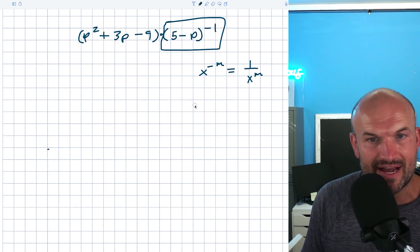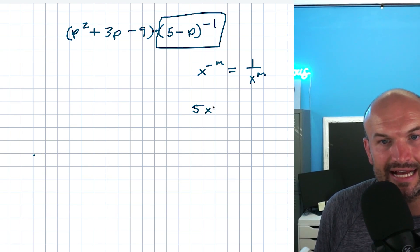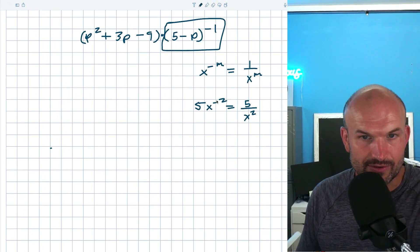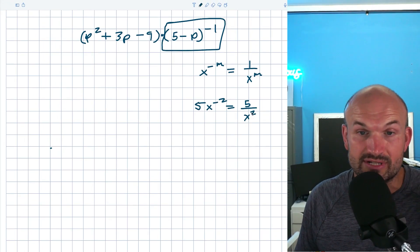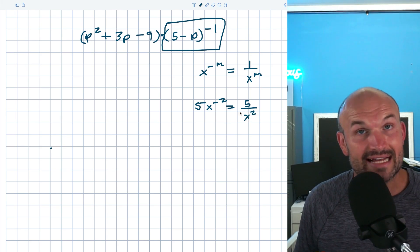So for an example, if I have like 5 times, let's say, x to the negative second power, I can rewrite that as 5 over an x squared, right? So whenever we have something raised to a negative power, I can rewrite that as the reciprocal or in the denominator here as a positive power.